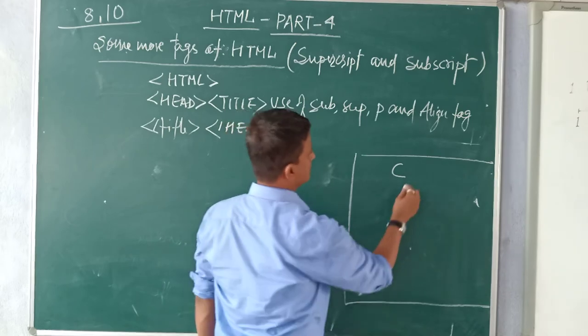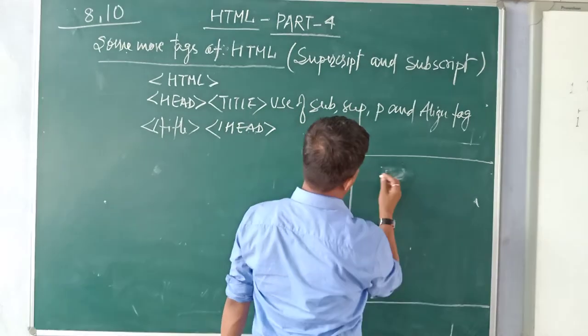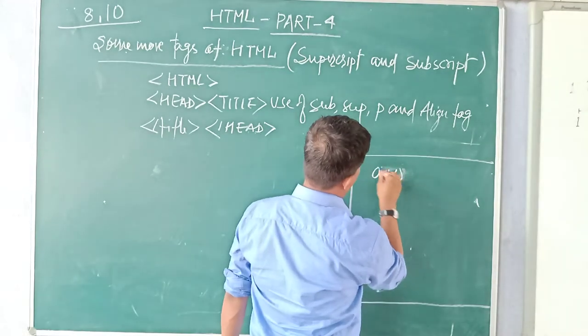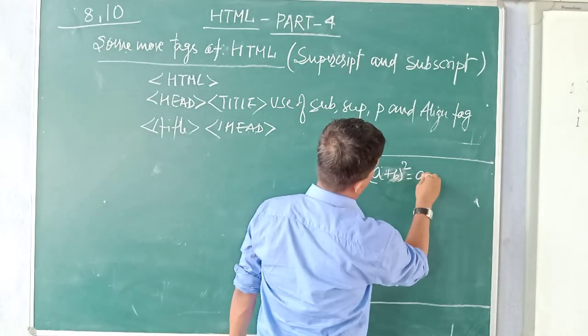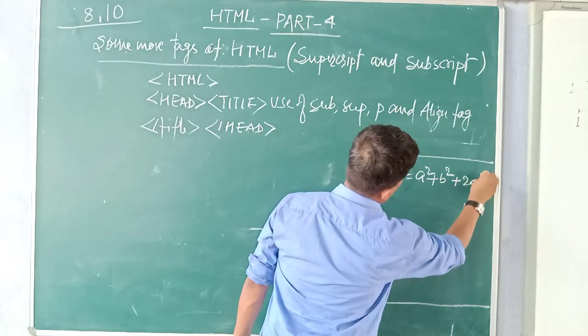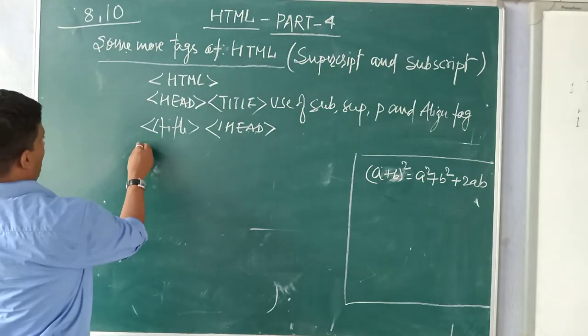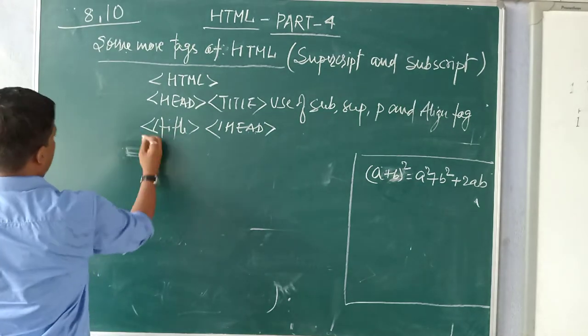Moving on to body part. Suppose you want to display your website like this: (a+b)² = a² + b² + 2ab. Starting body part.